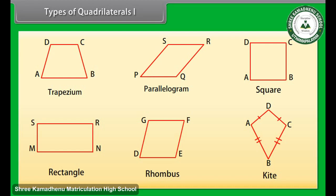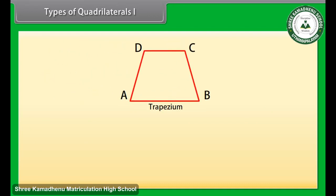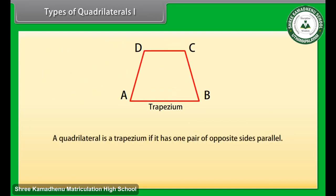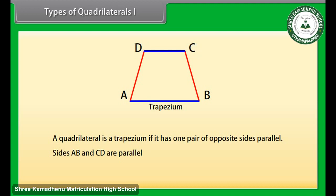Look at these figures. We will go through them one by one. First one is trapezium. A quadrilateral is a trapezium if it has one pair of opposite sides parallel. Here opposite sides AB and CD are parallel, so ABCD is a trapezium.